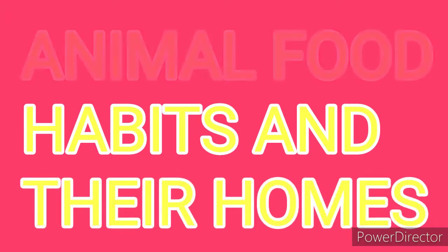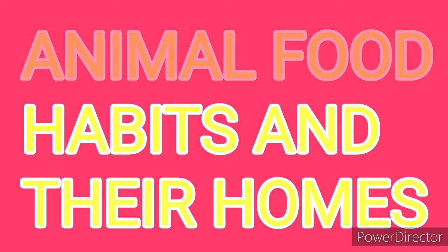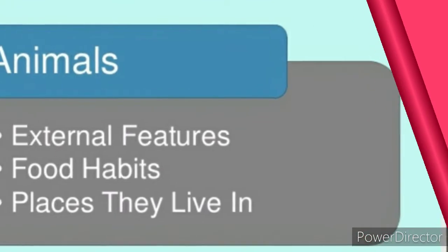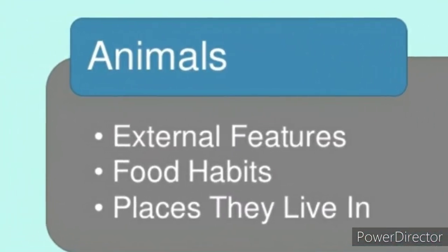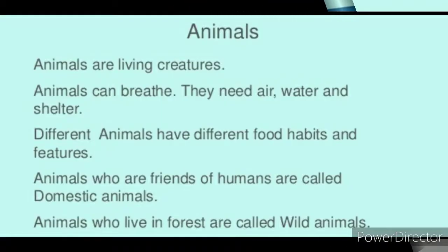Hi children, welcome to today's session. In today's class we are going to see animal food habits and their homes. Animals have external features, food habits, and places they live in. Animals are living creatures — animals can breathe, they need air, water, and shelter.